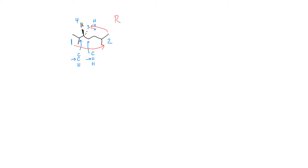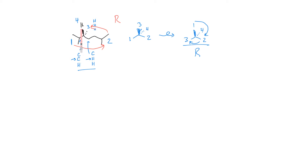Remember you can do the double swap. So if I swap the 3 and the 4, and then swap again the 1 and the 3, I've come back to the original. Counting 1, 2, 3, I also get R. So you can do the double swap, or you can simply recognize that the hydrogen is in the wrong position relative to you — it's towards you instead of away from you. Any technique you want, as long as you get to R in this case.